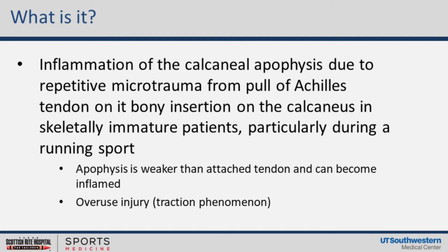An apophysis is a growth center that adds contour and shape to the bone, and oftentimes a muscle or tendon inserts there. In this case, it's the Achilles tendon that inserts over the calcaneus. The apophysis is a much weaker link — weaker than the actual tendon that attaches at the bony insertion — so it frequently becomes inflamed and irritated. This is an overuse traction-type phenomenon.